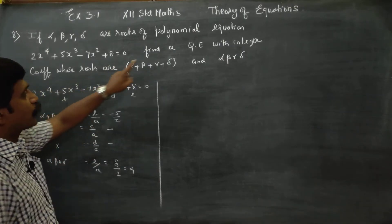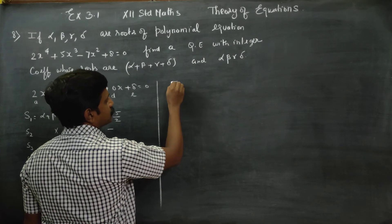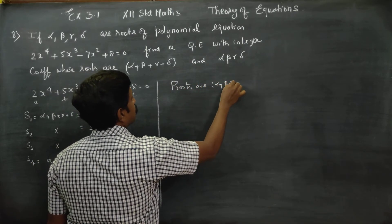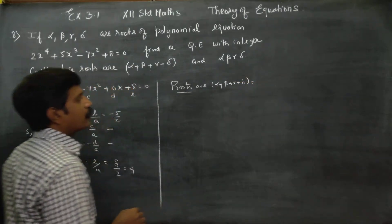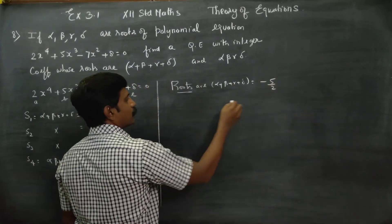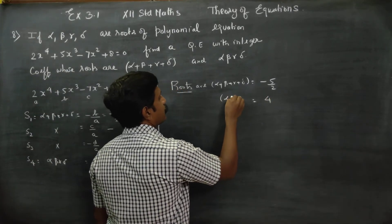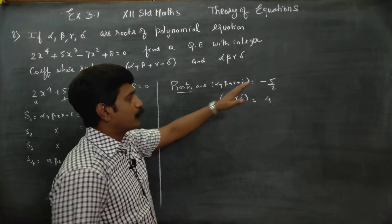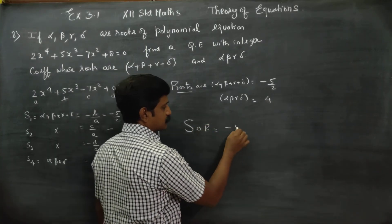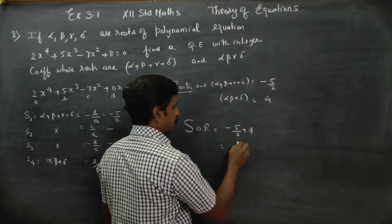I have to form a quadratic equation with these roots. My roots are: alpha + beta + gamma + delta = -5/2, and alpha·beta·gamma·delta = 4. The sum of the roots is -5/2 + 4. Taking LCM of 2: that gives (8 - 5)/2 = 3/2.